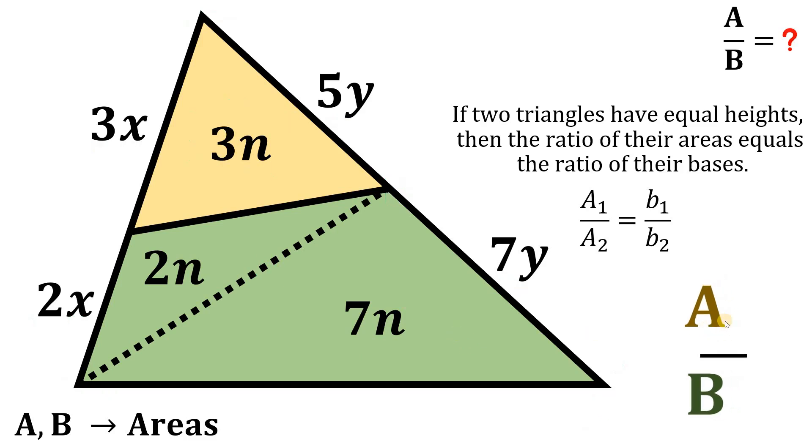So, A equals to 3 times n and B equals to 9n. And n over n cancel out.